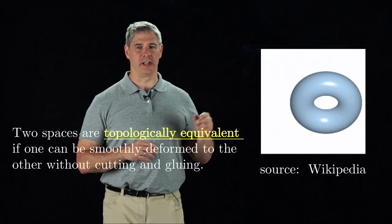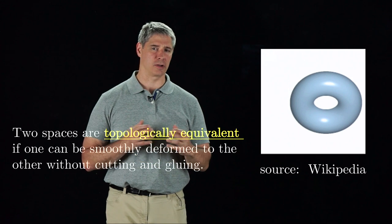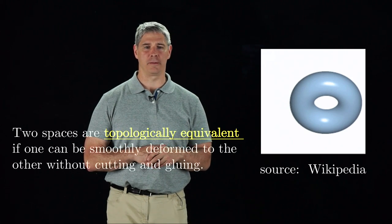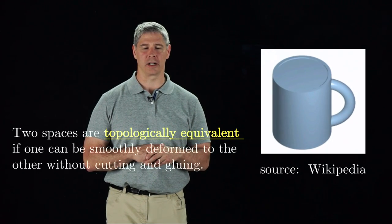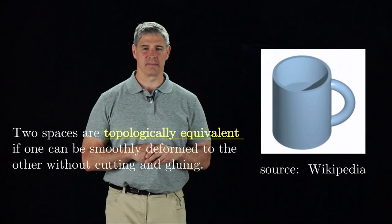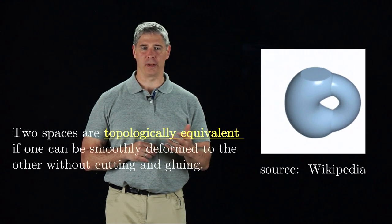A classic example is shown in this video, where the surface of a donut, also called a torus, is smoothly deformed into the surface of a coffee mug. These are both two-dimensional spaces. They cannot be deformed into a plane, however.